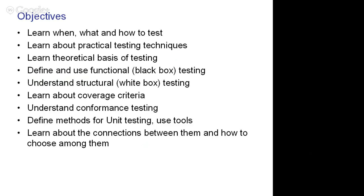These are the points that tell what is the purpose of this section of the course: learn the fundamentals of testing — some theory, but very little and simple things. How to do and use black box testing. Understand what is white box testing. Talk a little bit about coverage criteria. There will be another lesson about conformance testing, coming later in the course. And define and use methods for unit testing, checking coverage at the source level, and understand the connections between the two types of tests — why they are complementary and help each other.